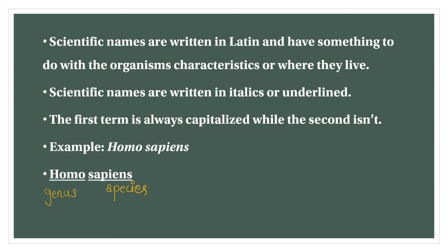The genus of a scientific name, such as Homo sapiens, is always written with a capital letter, while the species is written in lowercase. The two words together constitute the scientific name.